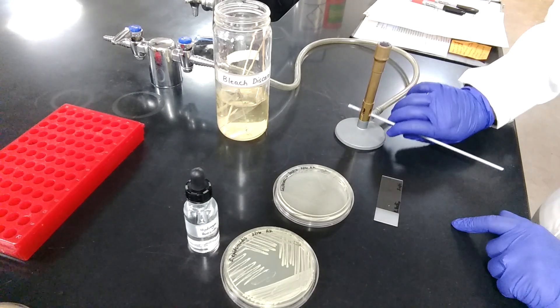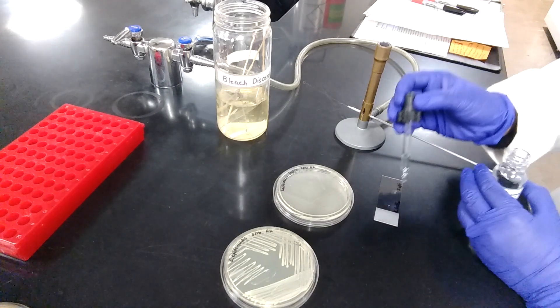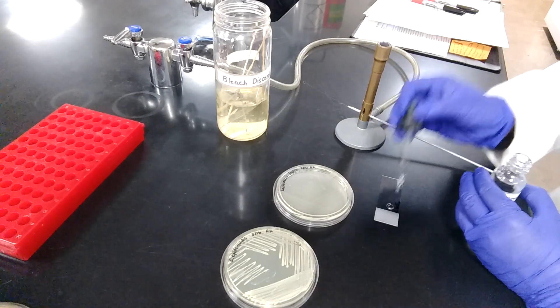Then sterilize the inoculating loop, put it away, and add a drop of hydrogen peroxide onto the bacterial growth.